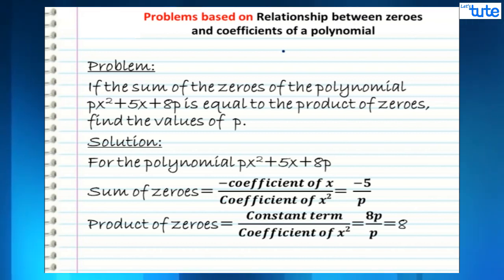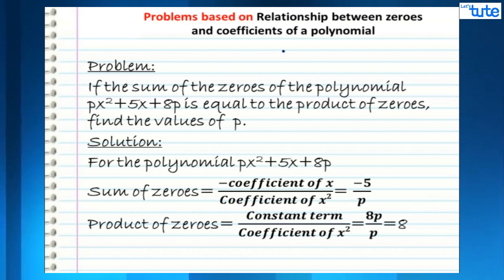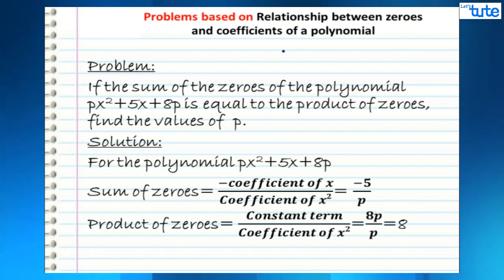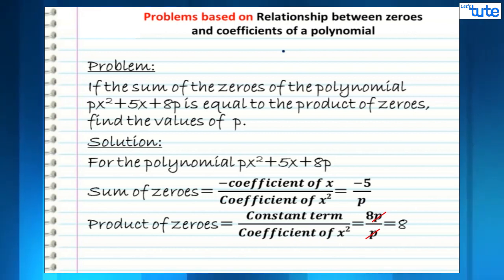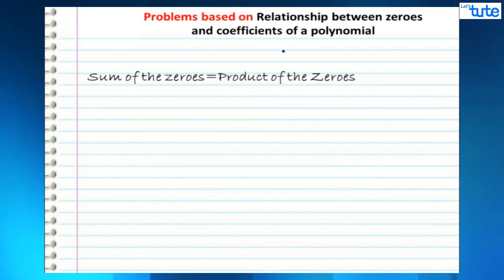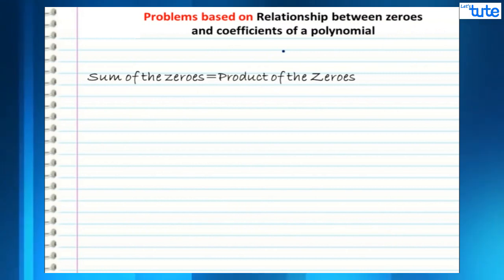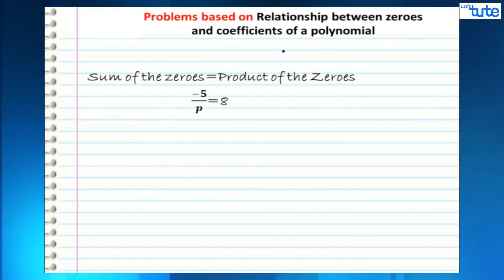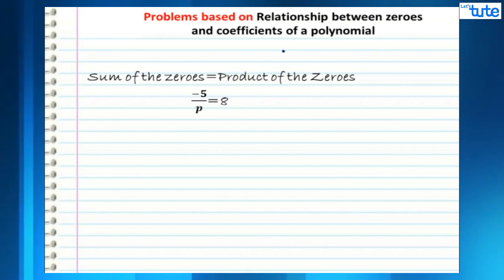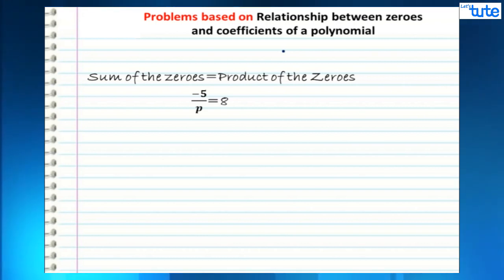The product of zeros is given by constant term upon coefficient of x². The constant term is 8p, so the numerator becomes 8p, and the coefficient of x² which is p becomes the denominator. So 8p upon p — canceling p — gives us 8. Since sum equals product, we get minus 5 upon p equals 8, therefore p equals minus 5 upon 8.